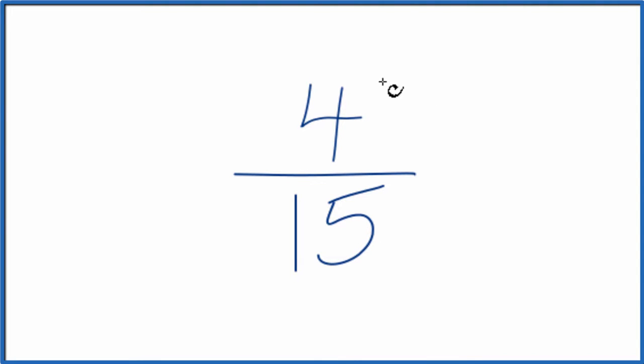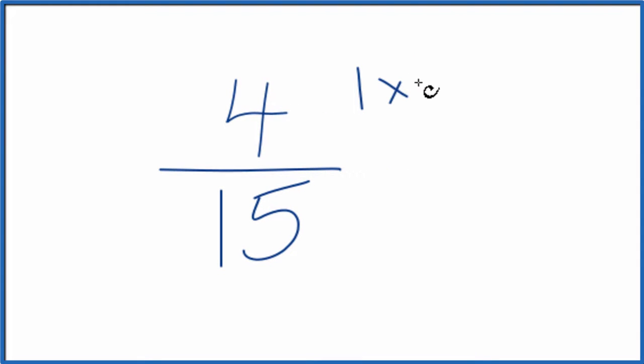So why don't we write the factors for the numerator and the denominator. For 4, we could have 1 times 4, that equals 4, or 2 times 2. That would equal 4. That's about it.